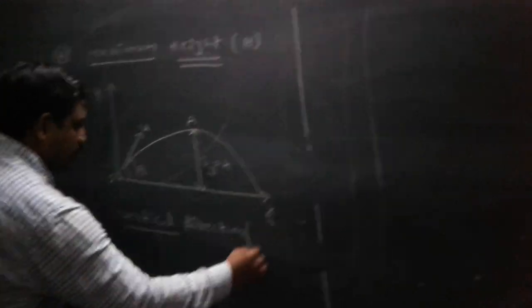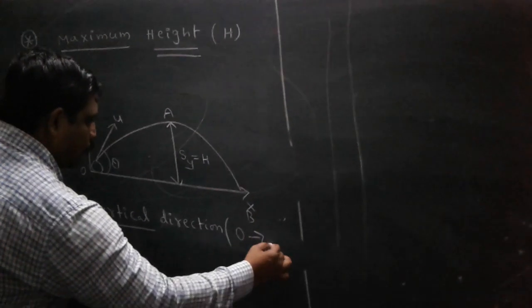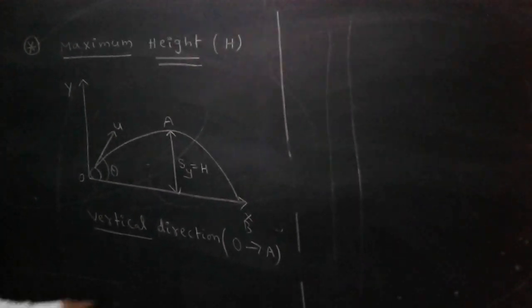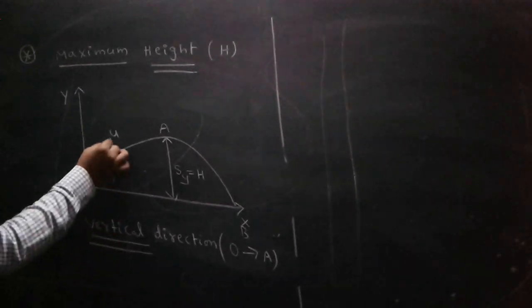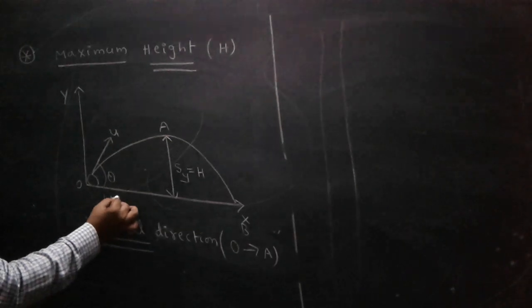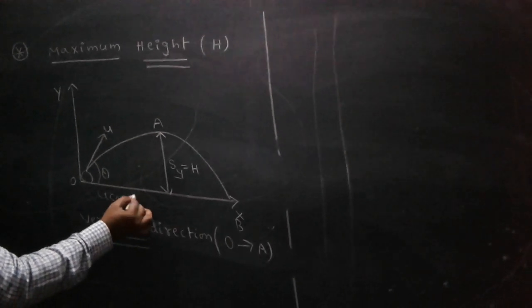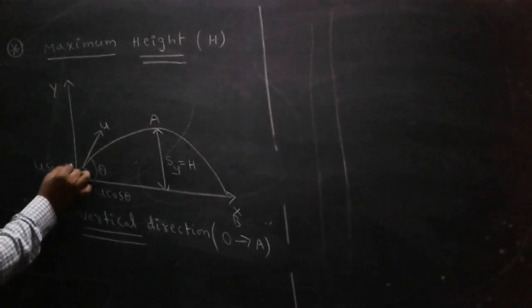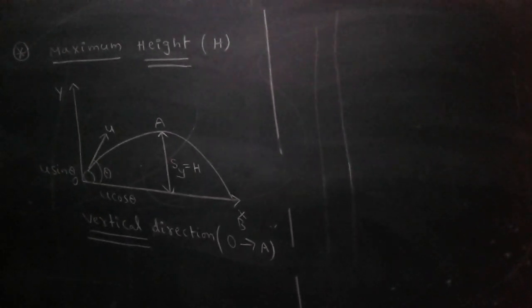Vertical direction along O to A. Here, I take the vertical direction. You resolve the horizontal initial velocity as U cos θ, and along the y-axis, U sin θ.